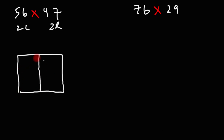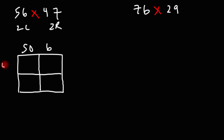So those are the two columns and here we have two rows. 56 is 50 plus 6, so we're going to break apart the two numbers like that. 47 is 40 plus 7.